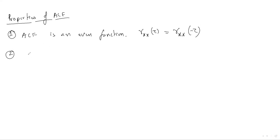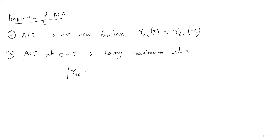The second property is that at τ=0, the autocorrelation function has its maximum value. That is, the ACF has maximum value at τ=0. So Rxx(0) ≥ Rxx(τ) for any value of τ.